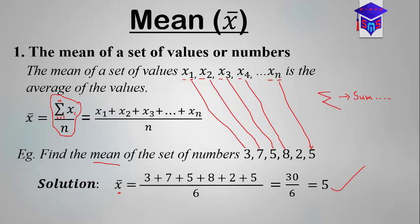Finding the mean is the same as finding the average: sum all the values and divide by the number of values. You sum all these values and divide by how many there are — in this case six. It's very simple.